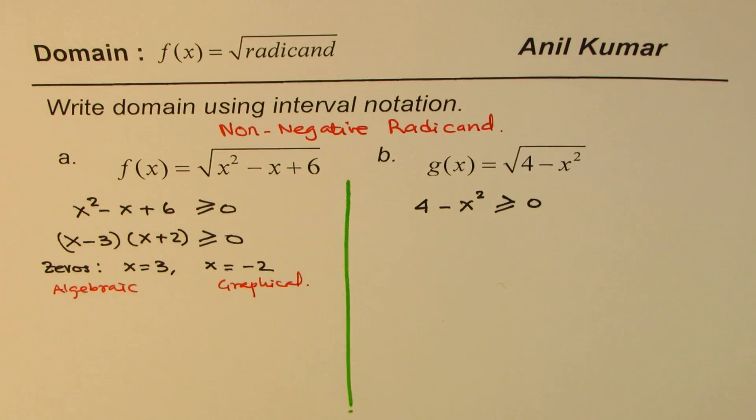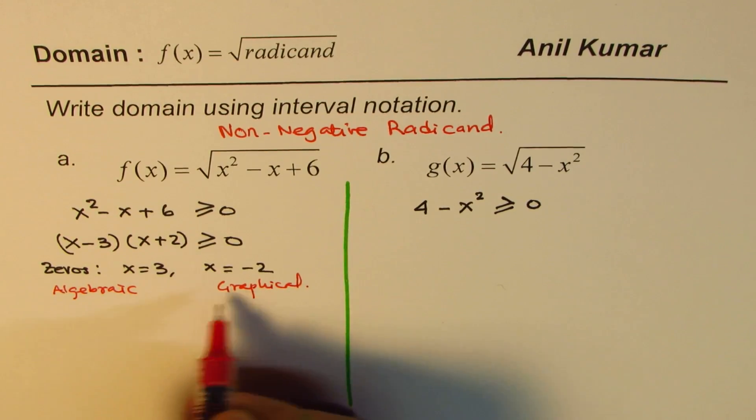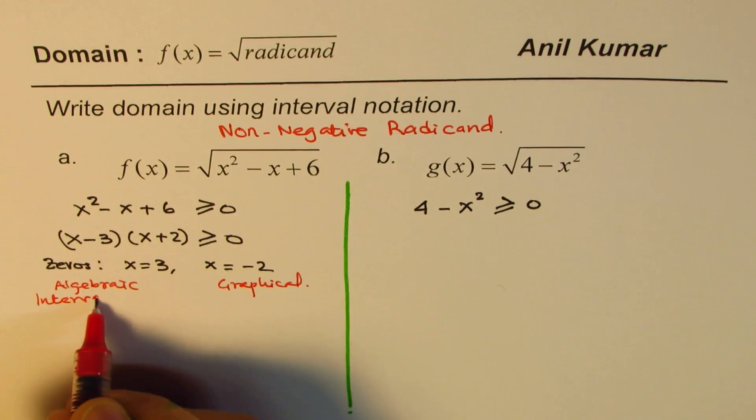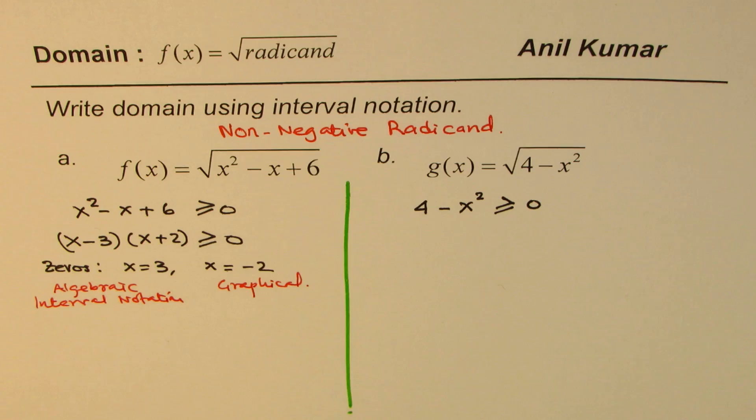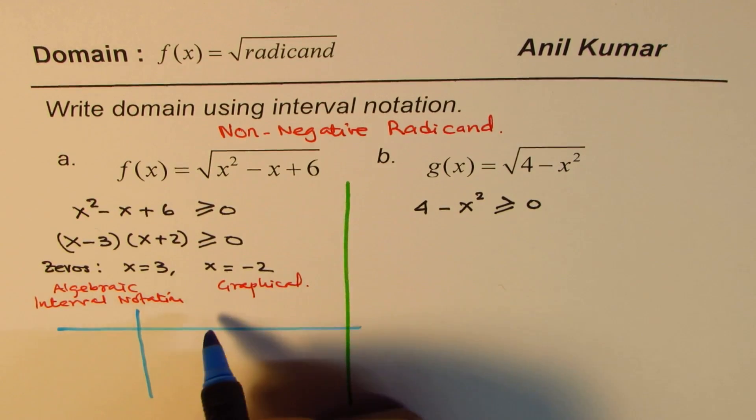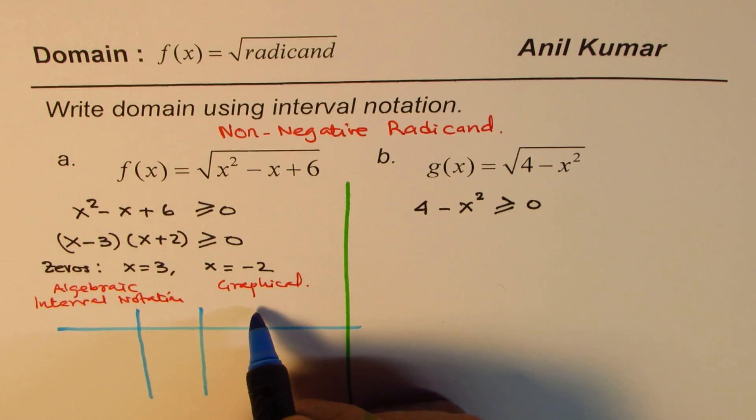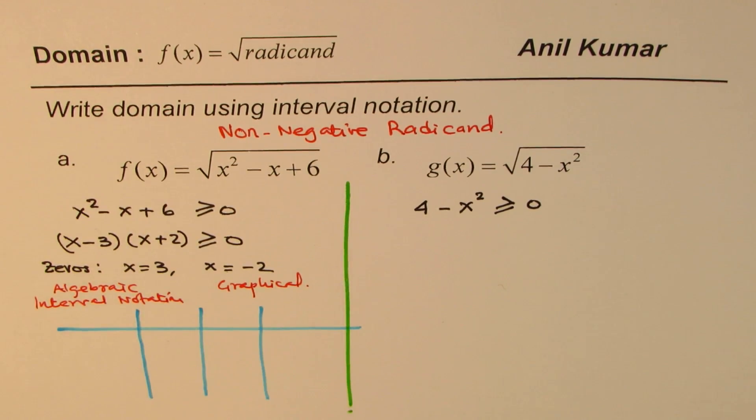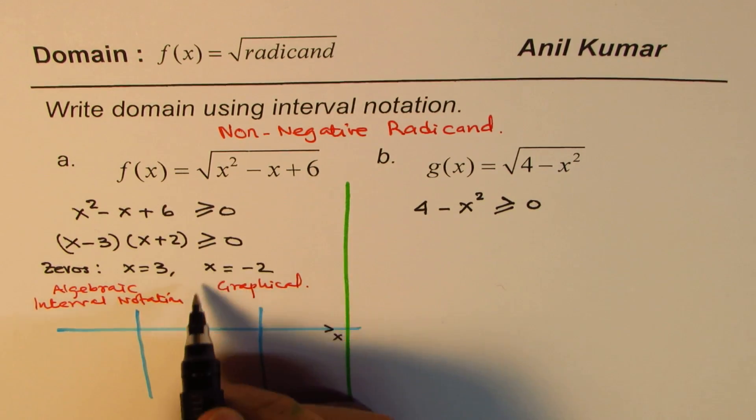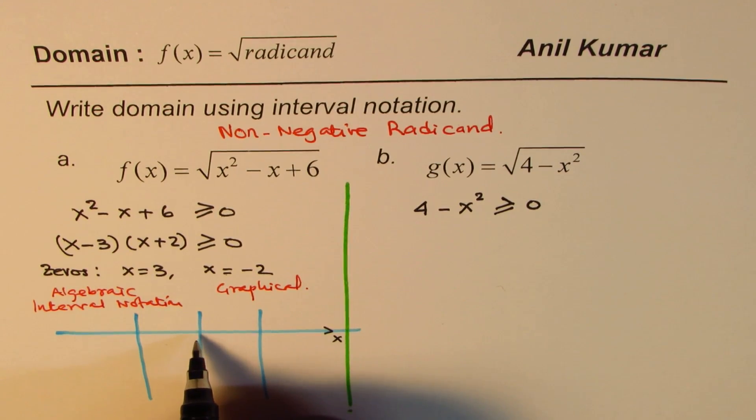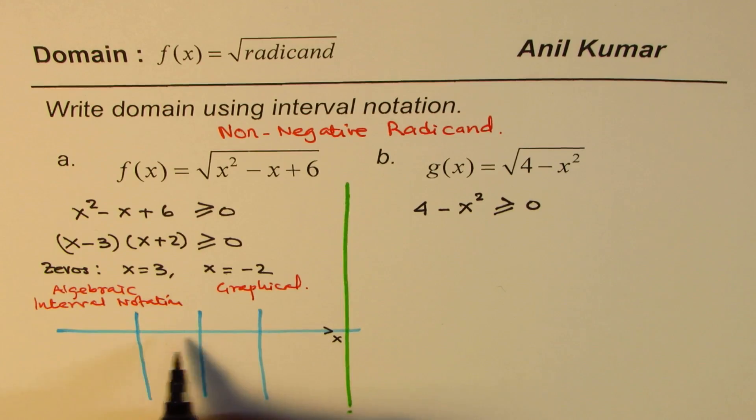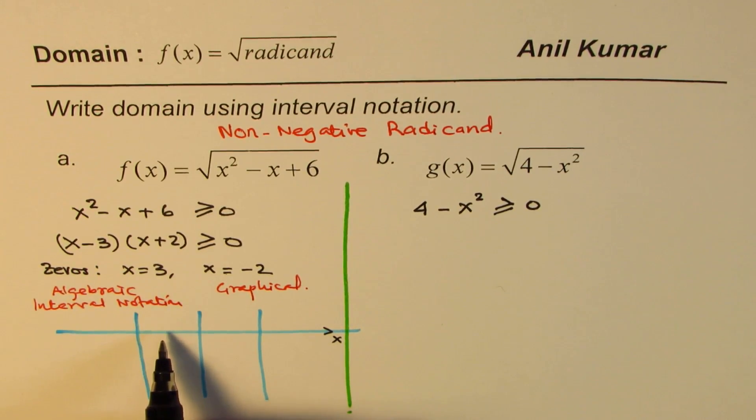So let's do algebraic method first, which is interval notation. Then I will sketch the graph over it and we'll get the solution. So what we try to do here is that we just test the values of the function in different intervals. How do we get those intervals? These are defined because of the zeros. The zeros are the points where the graph can change from negative to positive or positive to negative. So we analyze the intervals which are made because of the zeros.